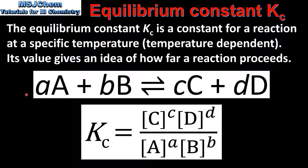Here we have a reaction in which reactants A and B react together to form products C and D. The lowercase letters in front represent the coefficients in the balanced equation.